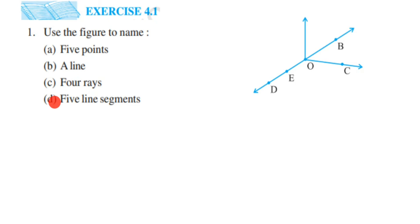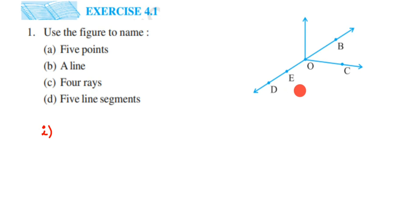This is the figure given to us. The first part asks for five points. Points are nothing but dots which are used to determine location. You can see that in this figure we have many dots. A dot is shown like this with a capital letter — D, E, O, C, B are all examples of dots here.